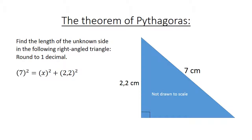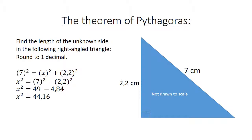Now we have 7 squared equals x squared plus 2.2 squared. So x squared equals 7 squared minus 2.2 squared. x squared equals 49 minus 4.84. x squared equals 44.16. x equals the square root of 44.16.